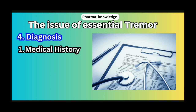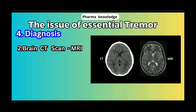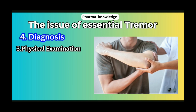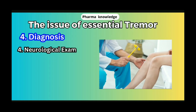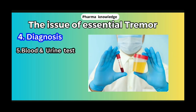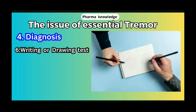For diagnosis: 1. Medical History — the patient's past medical issues and family history are reviewed. 2. Brain CT Scan or MRI Scan. 3. Physical Examination of the patient. 4. Neurological Exam. 5. Blood and Urine Test. 6. Writing or Drawing Test — the patient is asked to perform a writing or drawing task.